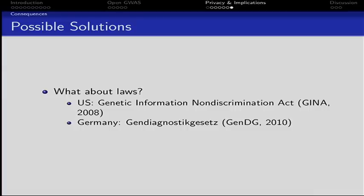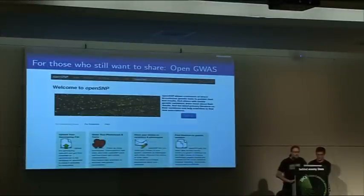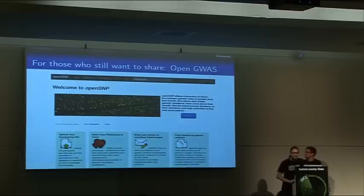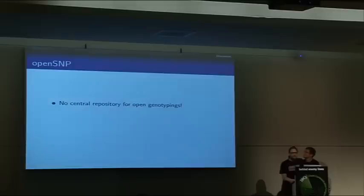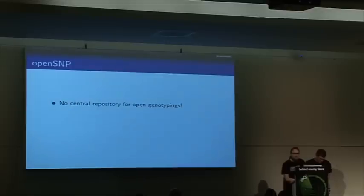Besides all these problems and possible inferences, we built a platform for those who still want to share. We've built OpenSNP, which allows you to upload your genetic information and phenotypic information. For customers, the benefit is mainly access to many publications and primary literature on genetic information. For researchers or citizen scientists, you get data — it's a cheap way to get lots of data for your own research. Up to now there was no central repository for open genotypings. There were about 50 people who had uploaded their data to GitHub or SourceForge, and mostly there was no phenotypic information about diseases.